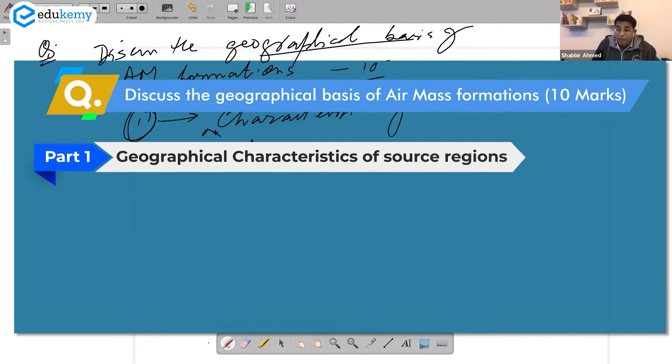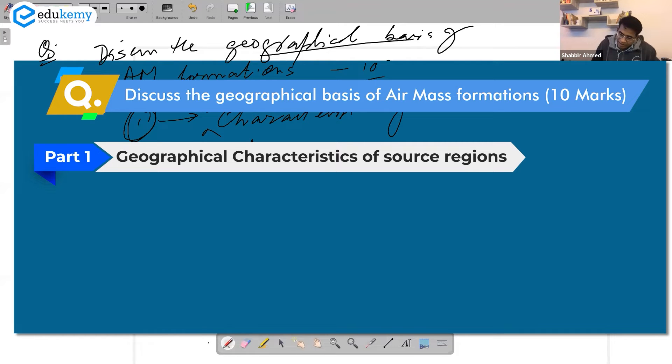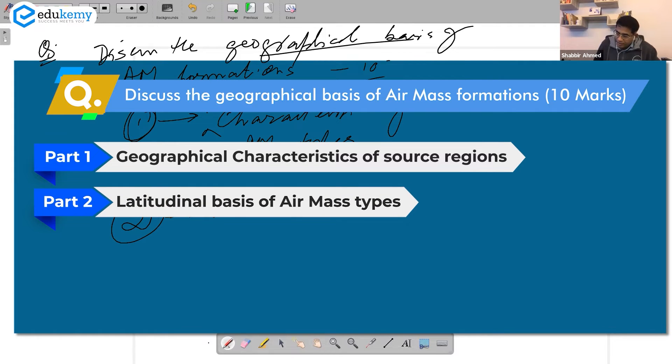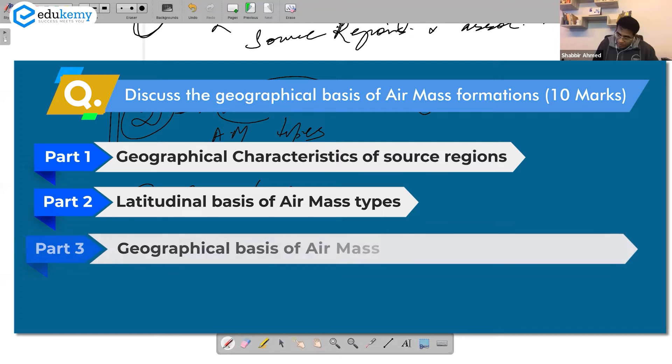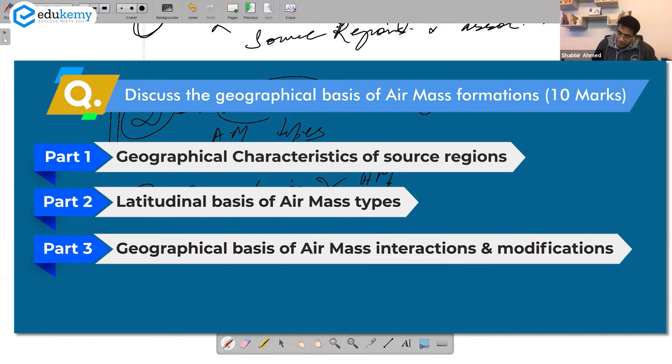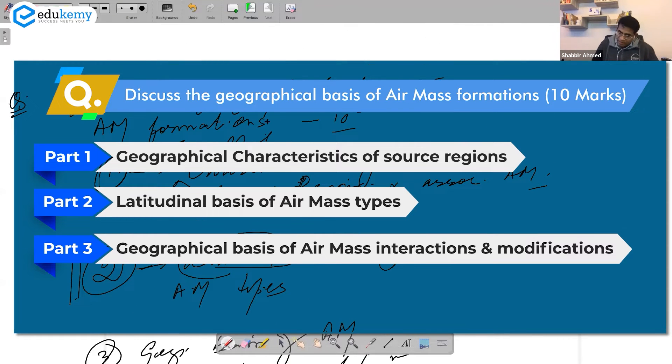In one part I will frame it as geographical characteristics of source regions, the latitudinal basis of air mass types, and I can also talk about the geographical basis of air mass interactions and modifications. So when I'm talking about formation, I'm also going a step ahead - form hone ke baad mein, how are they modified. Don't forget that.